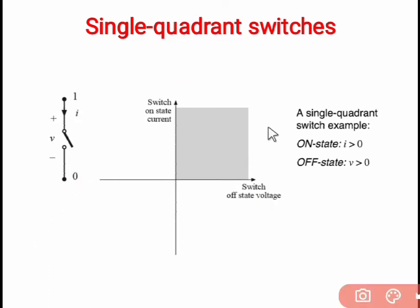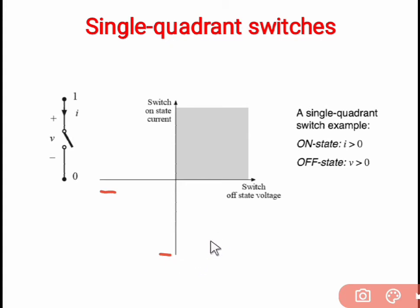In the first quadrant, voltage is positive and current is also positive. In the second quadrant, voltage becomes negative and current is positive. In the third quadrant, both voltage and current are negative. In the fourth quadrant, current is negative and voltage is positive. These are the four quadrants of the switch in which different types of switches will operate.